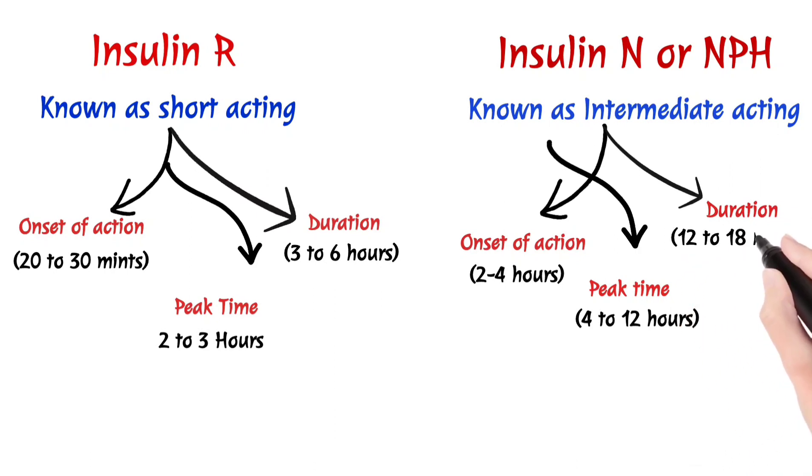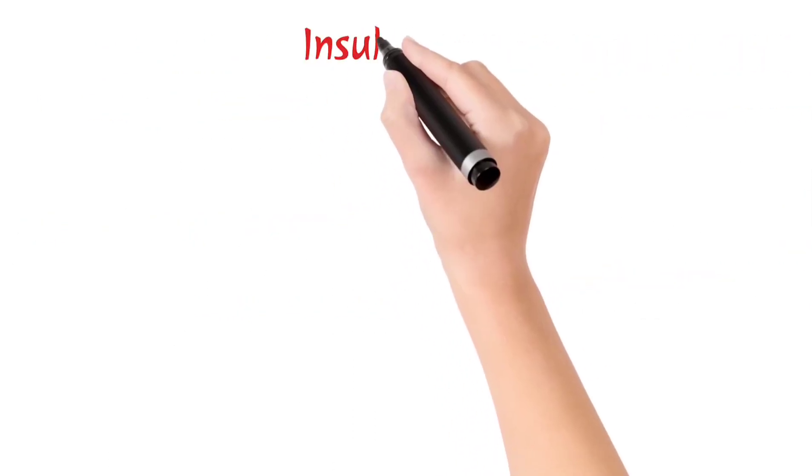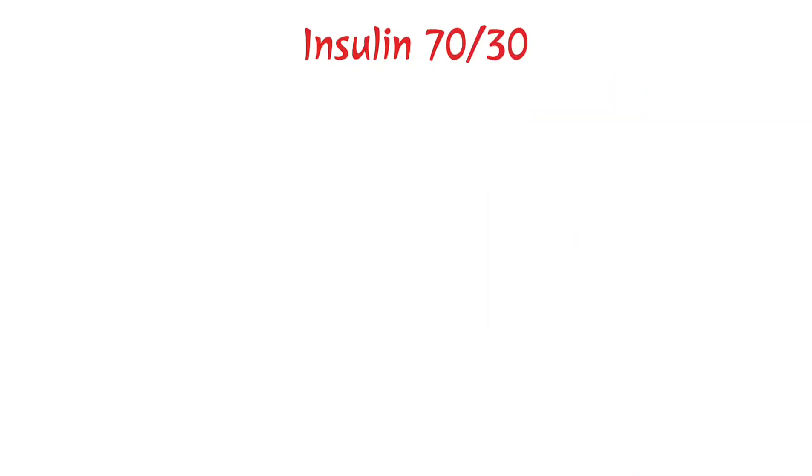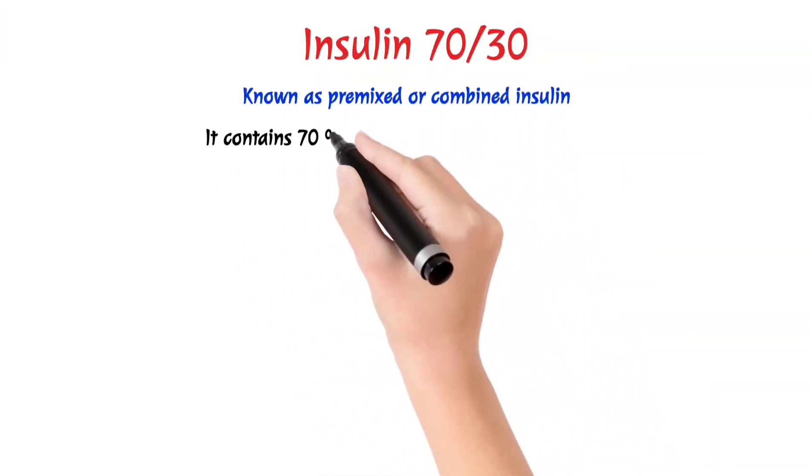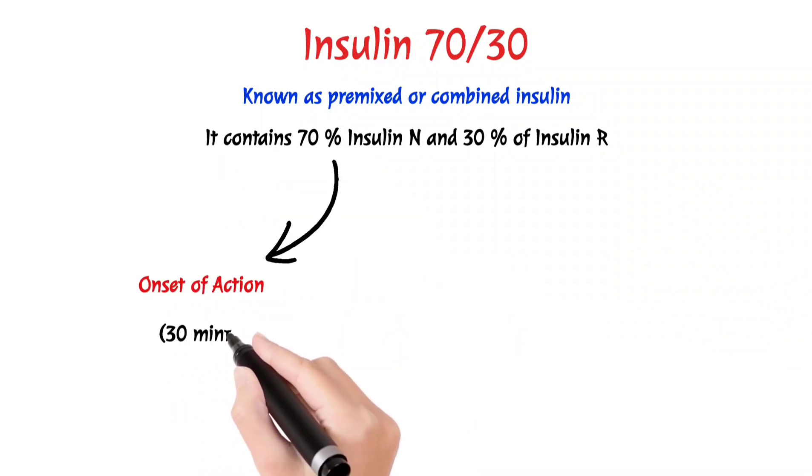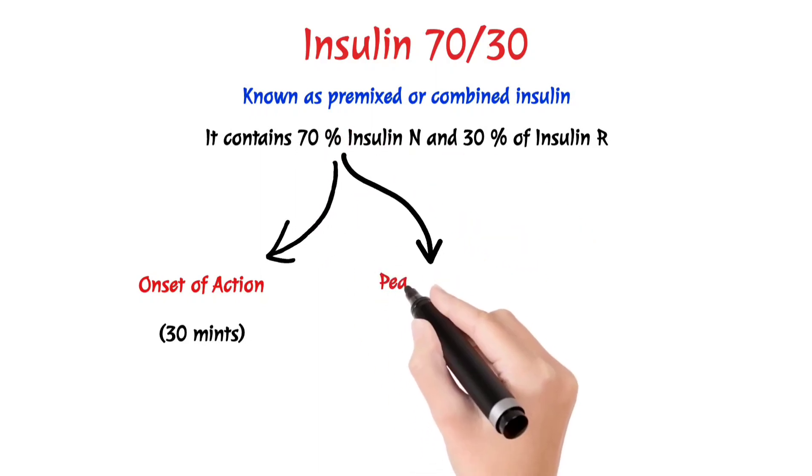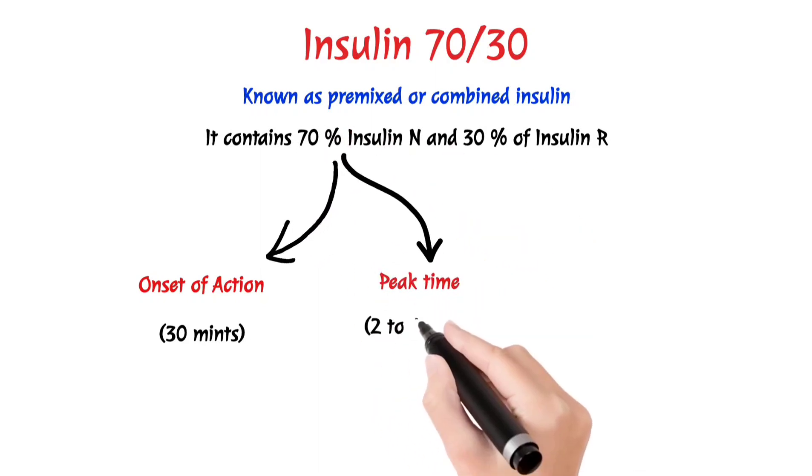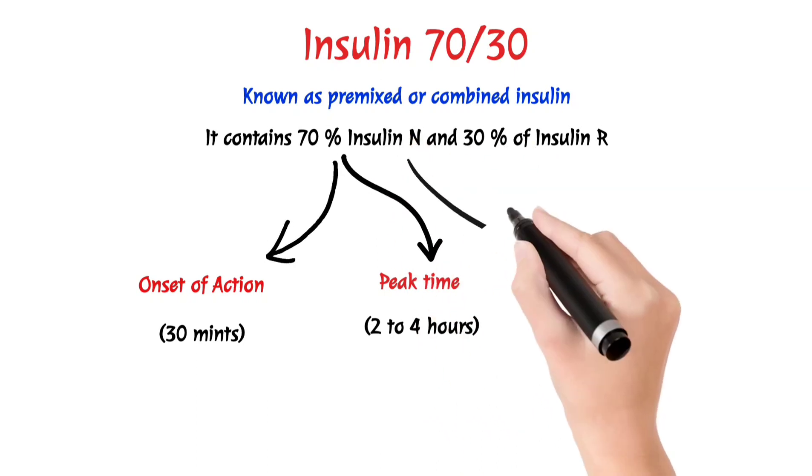The duration is 12 to 18 hours. And when we talk about Insulin 70/30, which is most commonly used and prescribed by doctors, it's also known as premixed or combined insulin. It contains 70% of Insulin N and 30% of Insulin R. So the onset of action is combined, it is 30 minutes because it contains Insulin R, and the peak time is 2 to 4 hours.